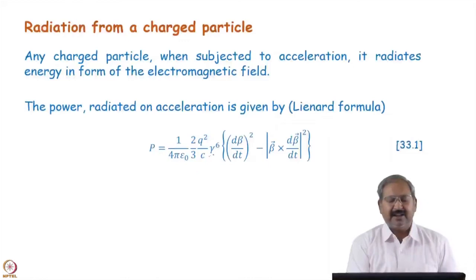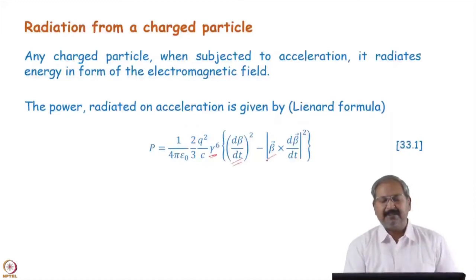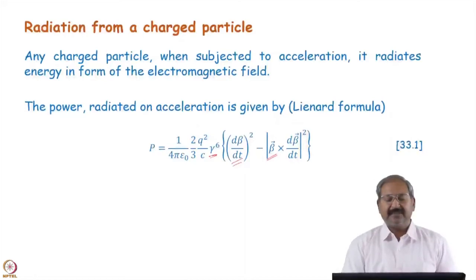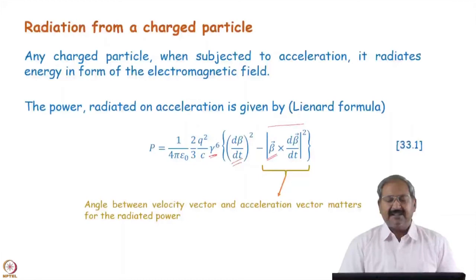Here, gamma is the relativistic gamma factor. d_beta/dt shows the acceleration of the particle and beta shows the speed of the particle. You can see in this formula that radiated power depends on the cross product of the velocity and acceleration — this is the velocity and this is the acceleration. The cross product of two vector quantities determines what is the angle between the velocity and acceleration of that charged particle, and radiated power depends on that.